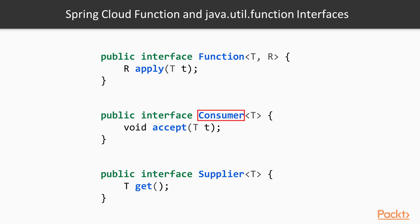Next is the Consumer, which takes whatever value it's been given and processes it. This could then be pushed onto a further service, stored in a database, logged to a file, or pushed into S3 after processing is complete. And then finally we have Supplier, which will return something back to the caller but isn't taking any arguments — for example, requesting a stream of data from another system.